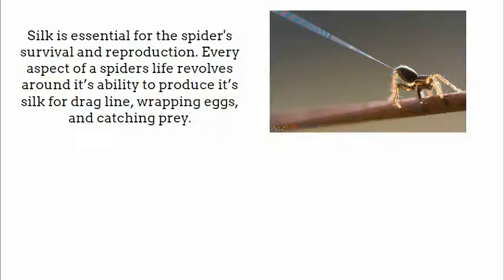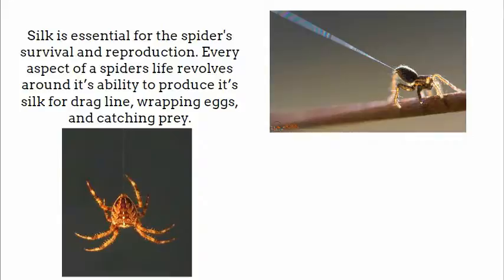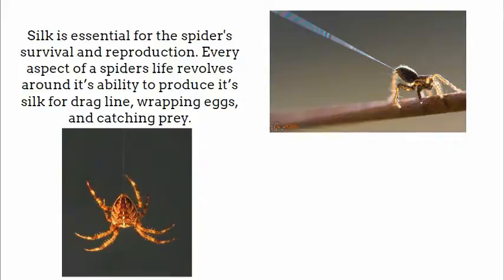Silk is essential for the spider's survival and reproduction. Every aspect of a spider's life revolves around its ability to produce silk for dragline, wrapping eggs, and catching prey. Spider webs are also used to create bulletproof vests and dissolvable stitches, while also being able to repair ligaments and tendons.